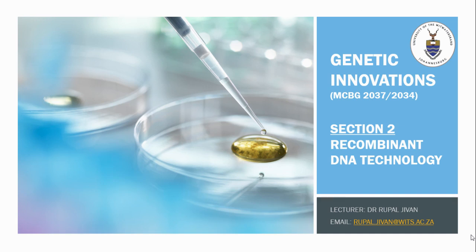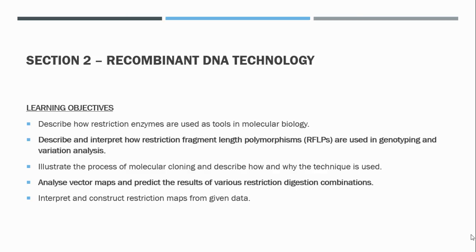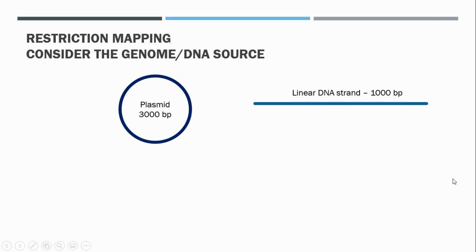Welcome to this lecture in recombinant DNA technology. In this lecture we will touch on concepts in the second and fourth learning objectives. I'm going to explain the concept of restriction mapping, which involves using restriction enzymes to identify the position of restriction sites on a fragment of DNA where we don't know any information about the sequence.